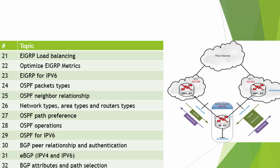We're going to cover EIGRP for IPv6, OSPF packet types, OSPF neighbor adjacency, network types, area types, OSPF path preference, OSPF operations, and OSPF for IPv6. We're also going to talk about BGP peer relationships and authentication. In real life we don't use that as much. We're going to talk about eBGP, the version for IPv4 and IPv6, and BGP attributes and path selection. That's the summary of Layer 3 Technology.